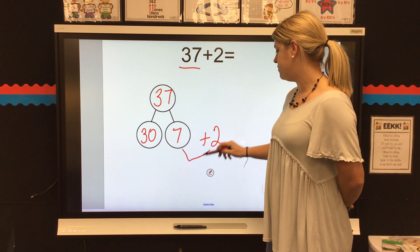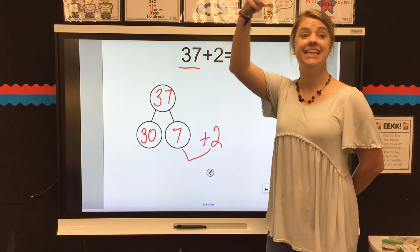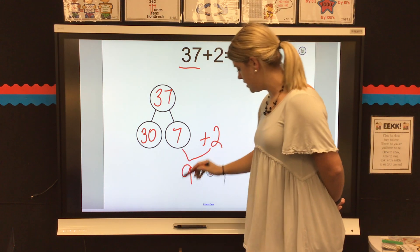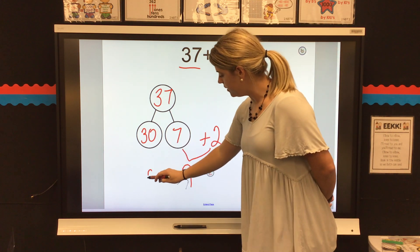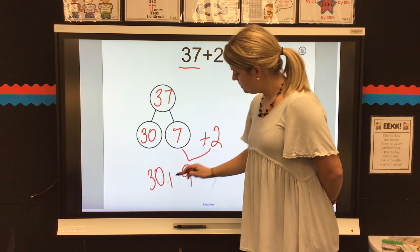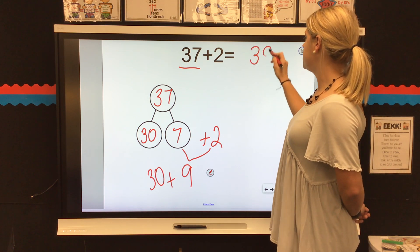Now, I know 7 plus 2 equals 7, 8, 9. And we're going to add 30 plus 9 equals 39.